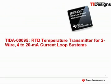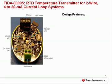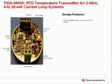The first TI design we will talk about is the RTD temperature transmitter for two-wire, 4 to 20 milliamp current loop systems. This comprehensive design provides a complete system that measures and processes temperature signal inputs from 2-wire, 3-wire, and 4-wire resistance temperature detectors and outputs a 4 to 20 milliamp current loop signal corresponding to the processed temperature. The reference design is intended for process measurement applications in factory automation, field transmitters, and building automation, due to its low power consumption.